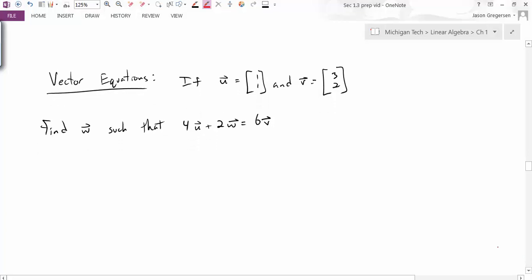We'll start by looking at a vector equation. If I have u equal to the vector [1,1] and v equal to the vector [3,2], find a vector w such that 4u plus 2w equals 6v. Now, if we look at this problem, it might be very tempting to solve this algebraically.